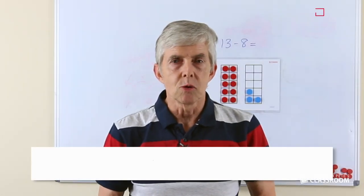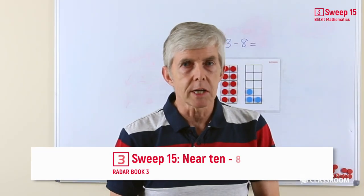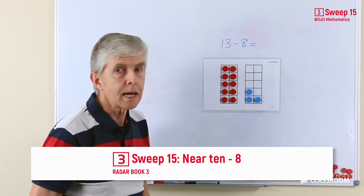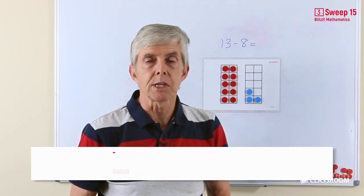This is sweep 15, so that means we're almost at the end of the subtraction strategies and we're looking at the other near-10 strategy for taking away 8.